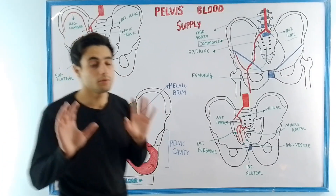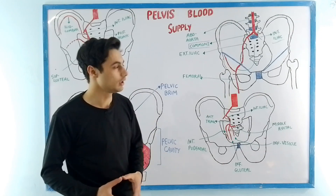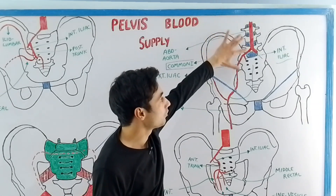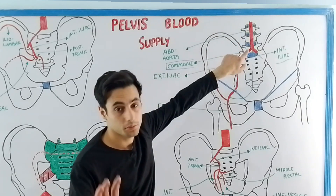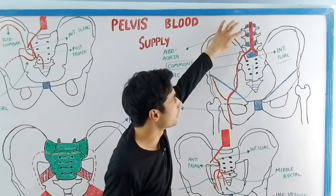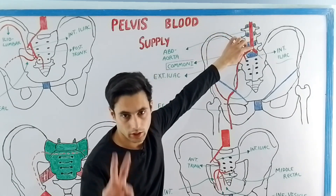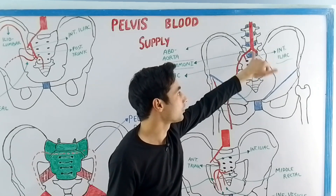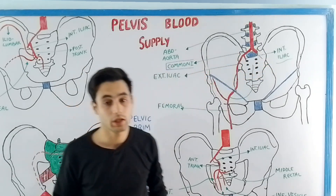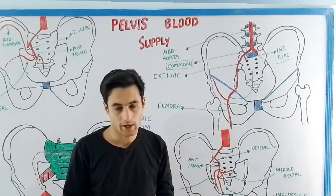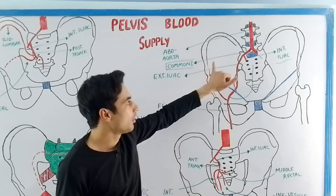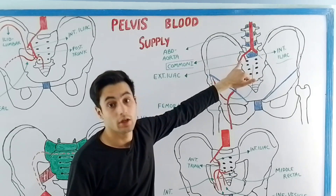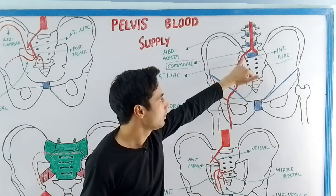Now we are going to trace the pathway of the arteries involved in the blood supply. Have a look at this diagram. The descending aorta is continuing down in front of the vertebra and approximately at the level of the fourth lumbar vertebra, this descending aorta will divide into two branches: the right common iliac artery and the left common iliac artery. The right common iliac artery will cover a longer distance compared to the left one, and eventually at the level of the pelvic brim or the pelvic inlet it will divide into two branches: the external iliac artery and the internal iliac artery.